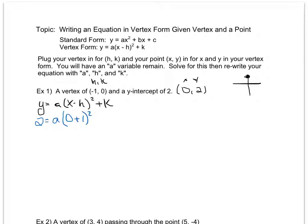Minus a negative one for h becomes plus one, and a zero for k. This then gives me two equals a times one squared. I don't have to write the plus zero. Squaring one is just one, so I get an a value of two.